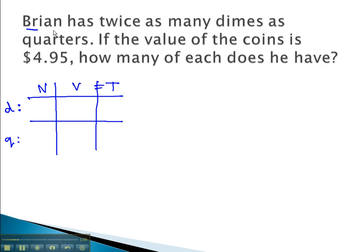We're told that Brian has twice as many dimes as quarters. How do we show that the dimes are twice as many? We multiply by 2. You might use 2x. This means the quarters are simply just x. For the value, then, we look at the value that a dime is worth. A dime is worth 10 cents. A quarter is worth 25 cents.